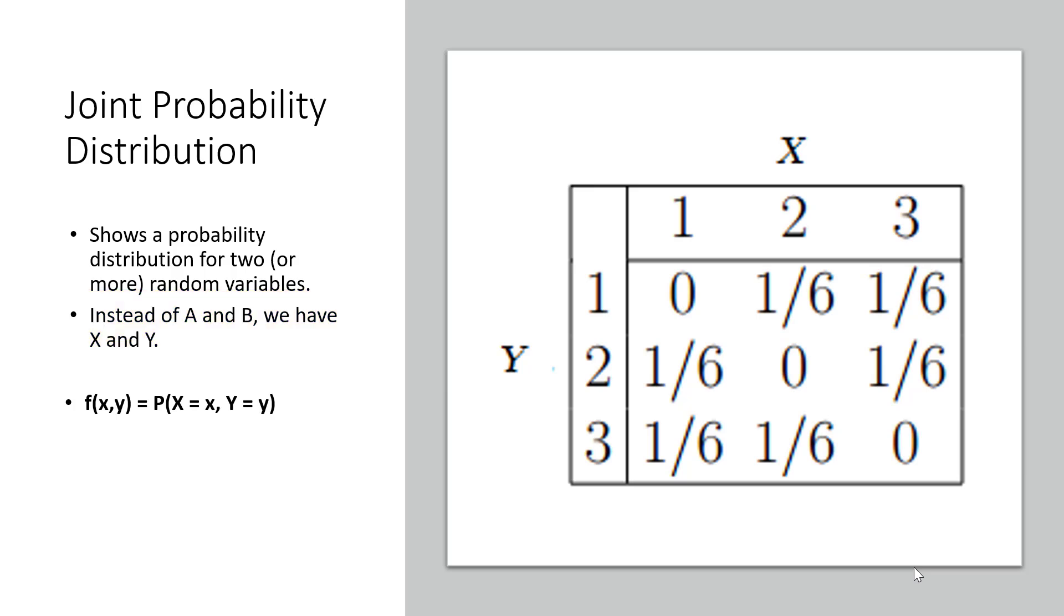The formal definition looks like this. But the whole point of the joint distribution is to look for a relationship between the two variables. That's all this formula is trying to quantify: a relationship between X and Y.